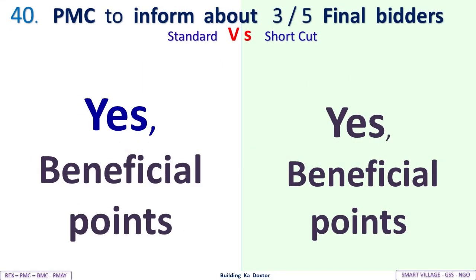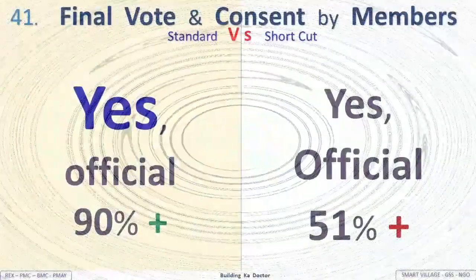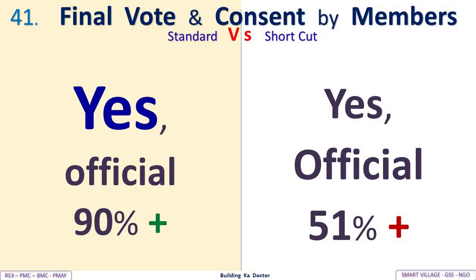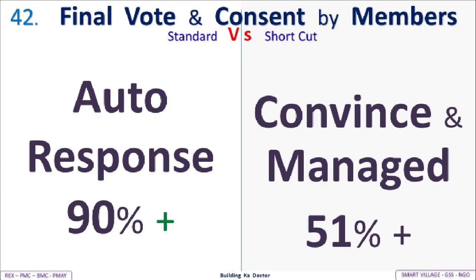BMC informs about three to five final bidders with beneficial points — same in both standard and shortcut methods. Final vote and consent by members: Standard — official 90% plus; shortcut — official 51% plus. The key difference: Standard achieves automatic response of 90% plus consent; shortcut relies on convinced and managed 51% plus.